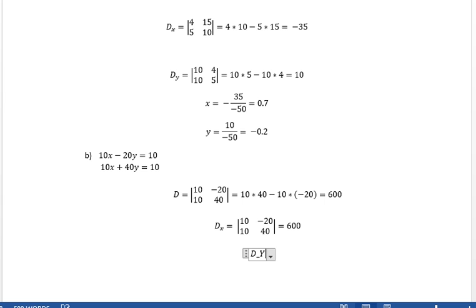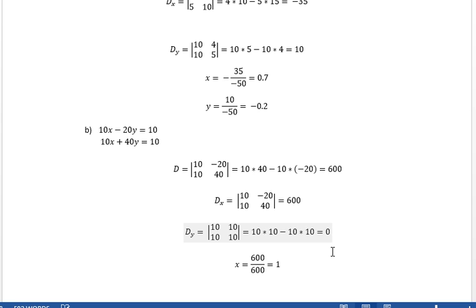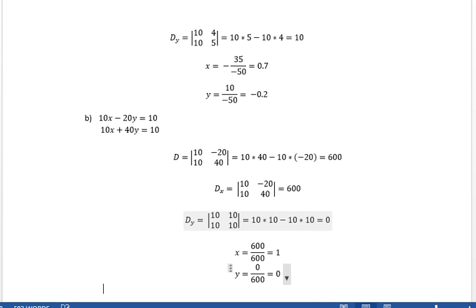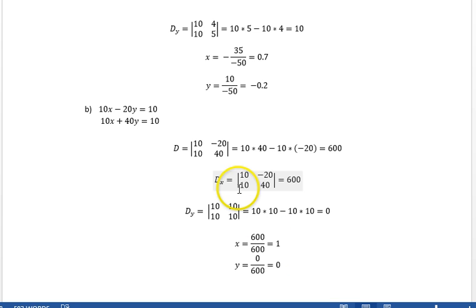And then for d sub y, we're substituting 10 and 10 in for the minus 20 and the 40. So that's 10 and that's 10. What is this? This is 10 times 10 minus 10 times 10 is 0. So this is a pretty easy problem. X equals 600 over 600 is 1, and y equals 0 over 600 is 0. X is 1, y is 0. And that's it for problem 5.